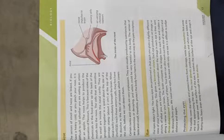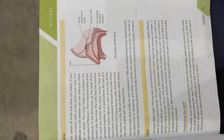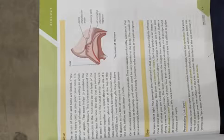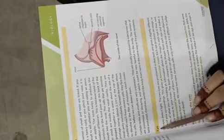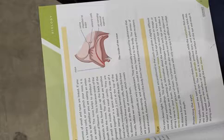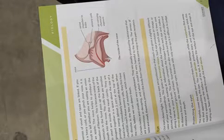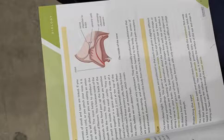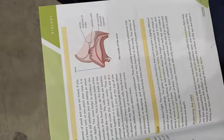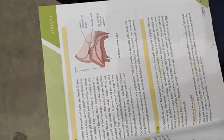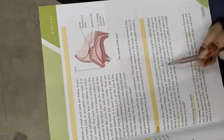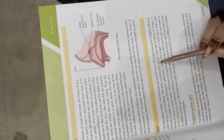Assalamu alaikum students, hope you all will be fine. We are studying the sense organs and their functionality. We have studied the skin, tongue, and nose, so today we are going to study the next sense organ — the eye. Our eyes basically detect light and help us see whatever is in our surroundings. We have two eyes, positioned so that each one gives a slightly different view, which means they give us binocular vision.